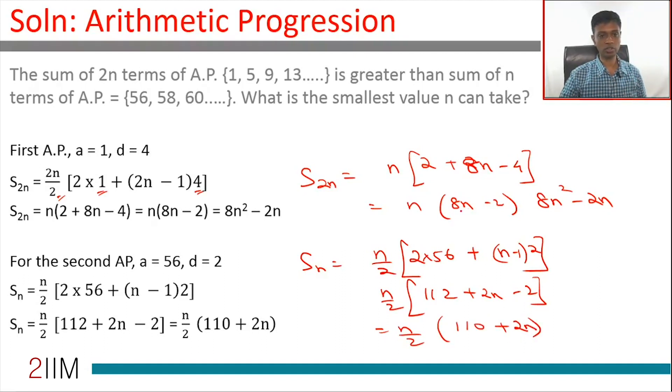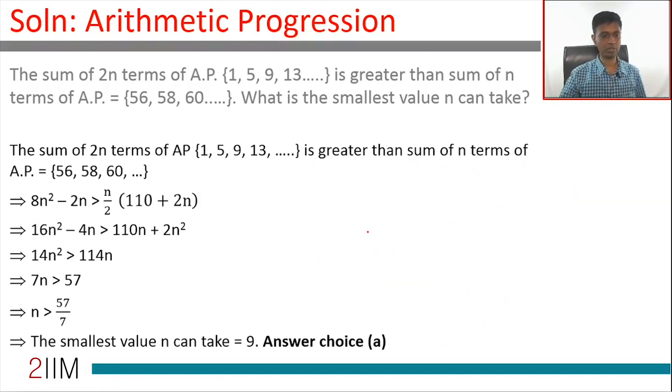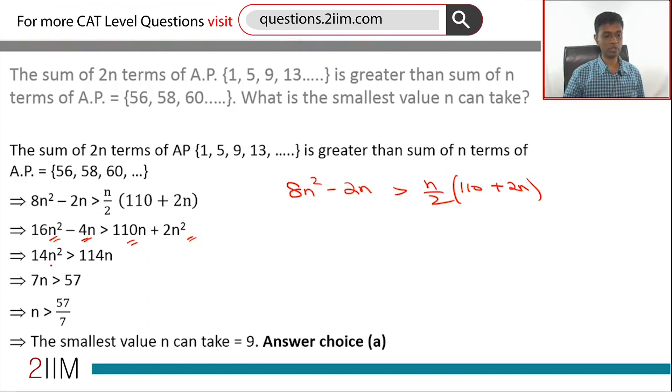We are told this is greater than this. Let us solve that in the next page. We know that 8n square minus 2n is greater than n by 2 into 110 plus 2n is what is here. So, if we cross multiply, we get 16n square minus 4n is greater than 110n plus 2n square. Take this this side, we get 14n square is greater than 114n or 7n is greater than 57. N is positive so we can cancel it off. N is greater than 57 by 7.